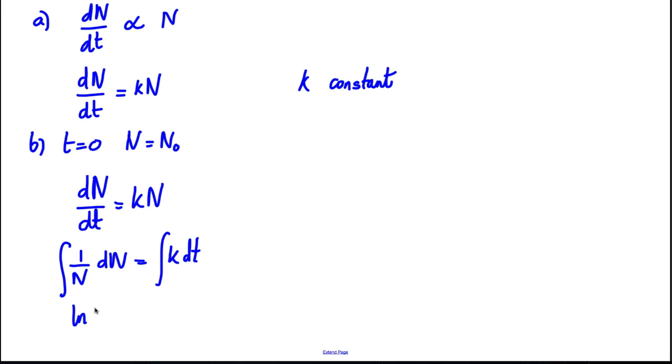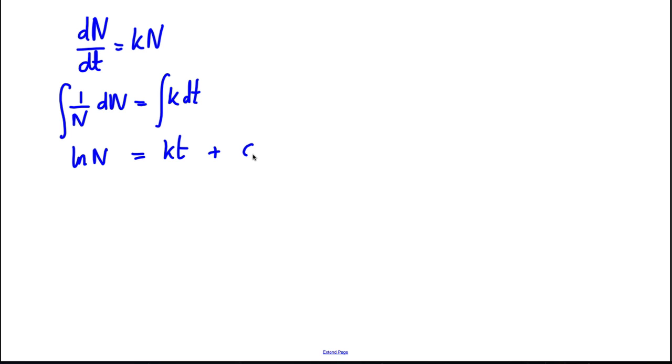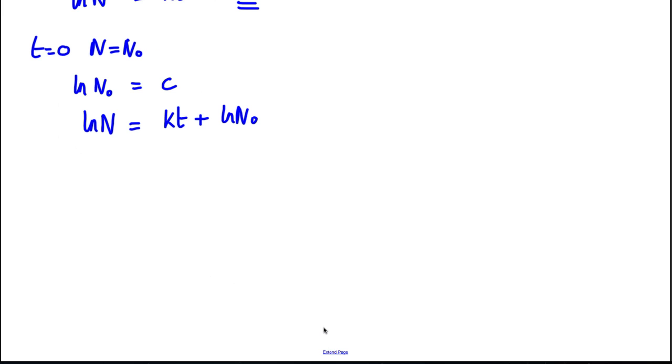So therefore, ln N is going to be equal to KT plus some constant. And we know when time is zero, N is equal to N₀. So we can sub that in here. So ln of N₀ is going to be equal to C. This will disappear. So we can replace this by ln N₀. So ln N is equal to KT plus ln N₀. And we can take the exponential of both sides.